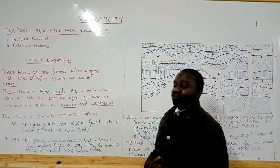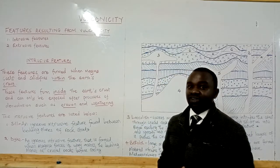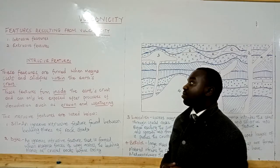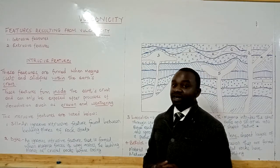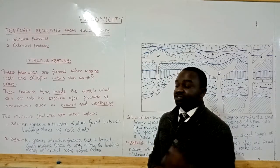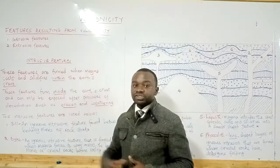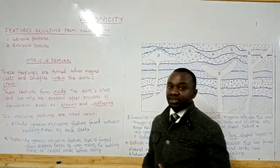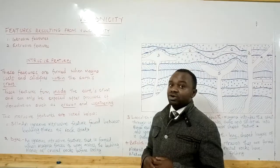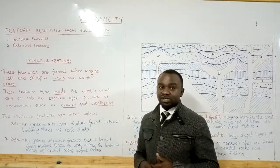On to the features. There are two main types of features that are formed from volcanicity: intrusive features and extrusive features. For today, we are only going to focus on the intrusive features.